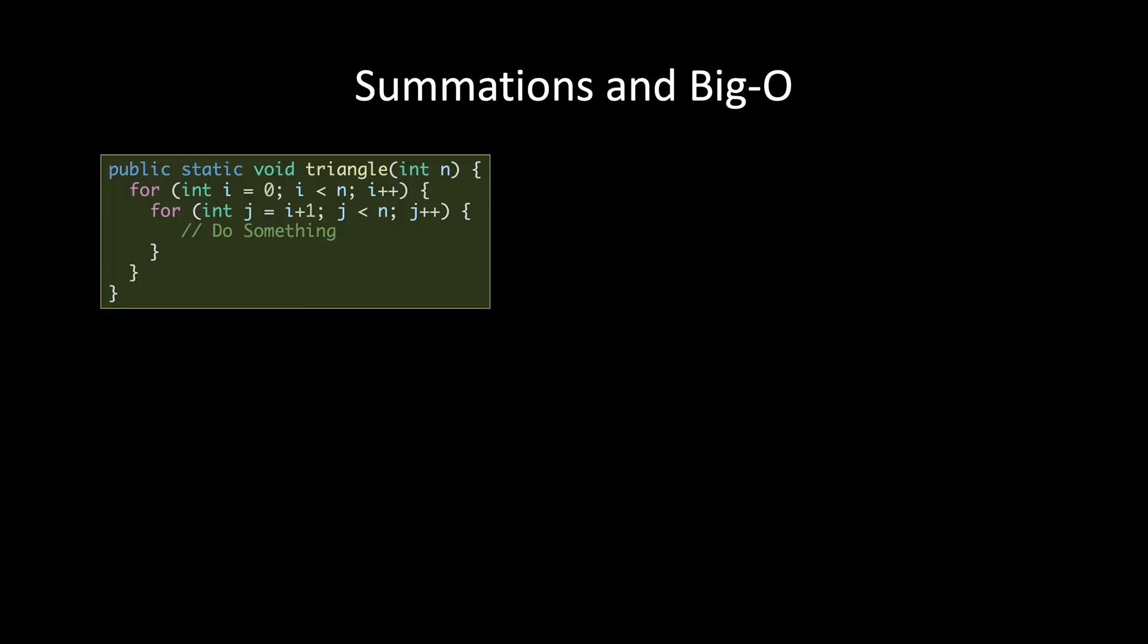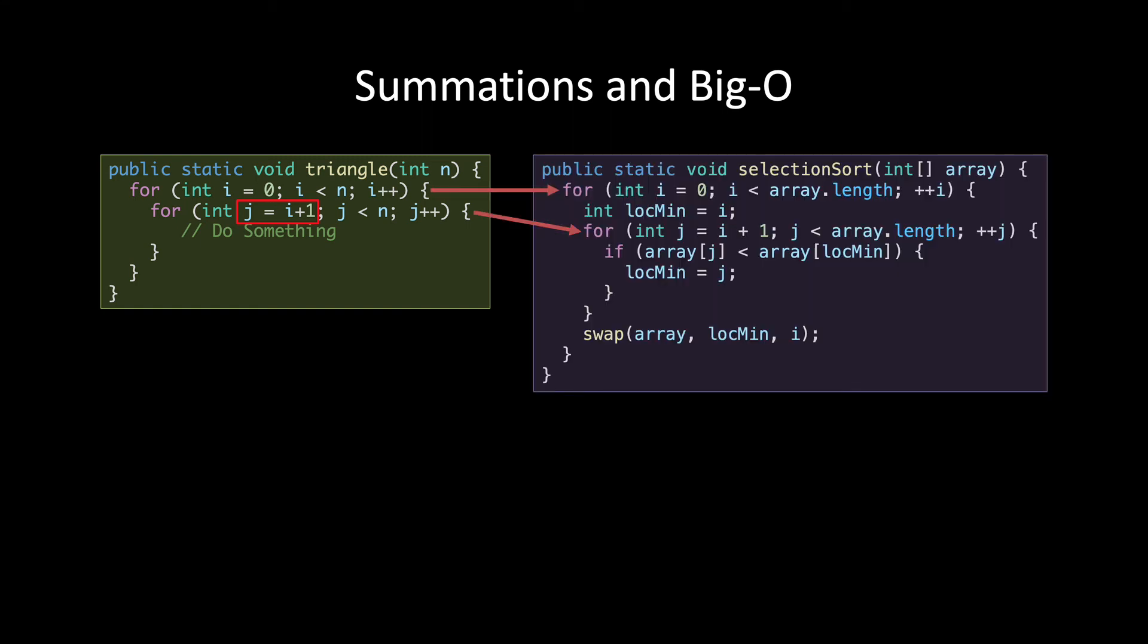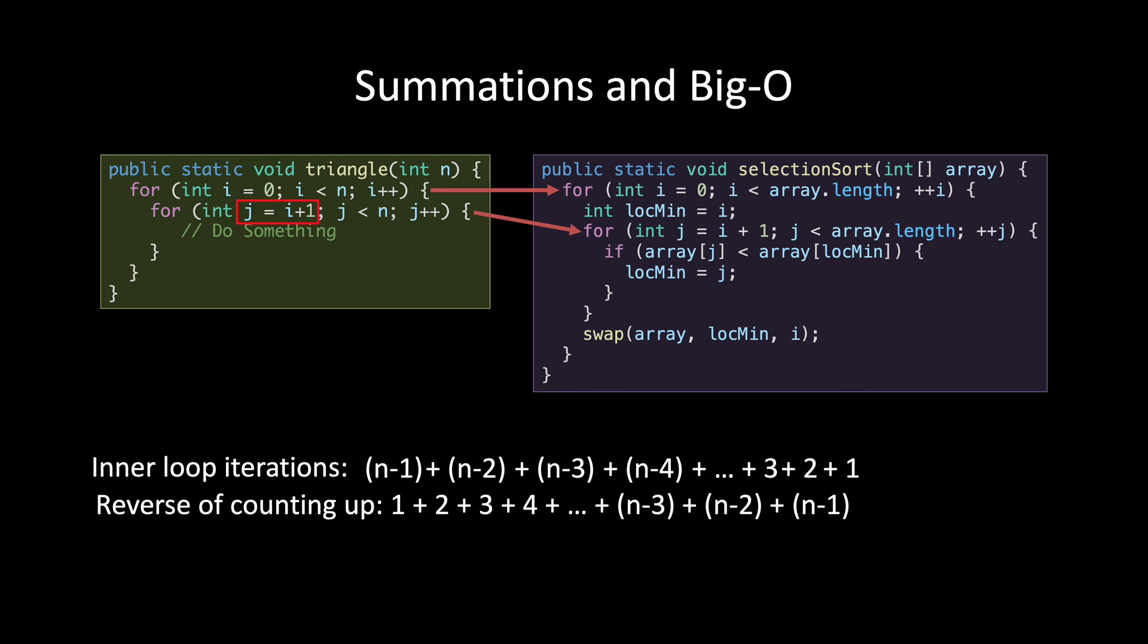Do you remember analyzing this particular code pattern when you first learned big O? This nested loop where the inner loop starts at the outer loop's index. This is just the fundamental pattern inside the selection sort. The first time this inner loop runs, it runs N minus one times, and then the next time it's N minus two, and then it's N minus three, and so on, all the way down until it only runs one time. When you reverse this sequence, you're just adding up all the numbers from one to N minus one. And so if you'll remember, the formula for that is just N minus one times N over two, or N squared minus N over two. So that is less than N squared, but it's still big O of N squared. It just differs by a constant.